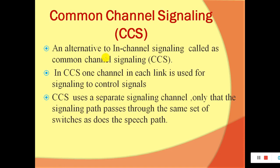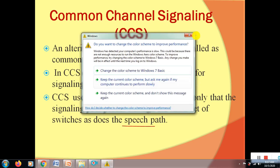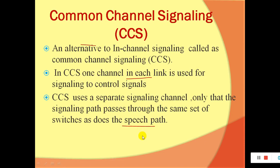In common channel signaling, one channel in each link is used for signaling to carry control signals. CCS uses a separate signaling channel — the signaling path passes through the same set of switches as the speech, but the channel itself is separate. So the key difference is: in common channel signaling, instead of using the same channel to transfer control signals and data, there is a separate channel for data as well as for speech.